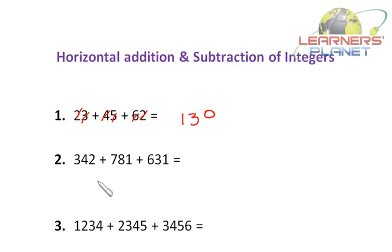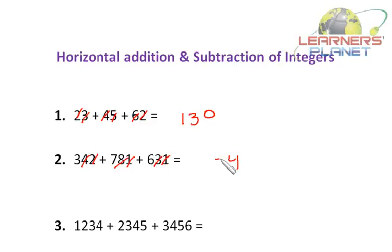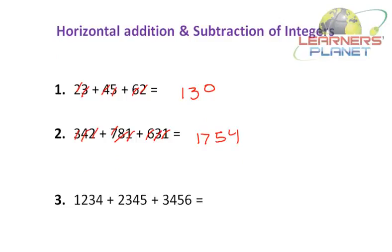Now let's take the problem 342 plus 781 plus 631. To avoid visual confusion I'll cut the numbers. 2 plus 1 is 3, plus 1 is 4 — wait: 2 plus 4 is 6, plus 8 is 14, plus 3 is 17. Write 7, carry 1. Then 1 plus 3 is 4, 4 plus 7 is 11, 11 plus 6 is 17. You see, friends, it's so fast.